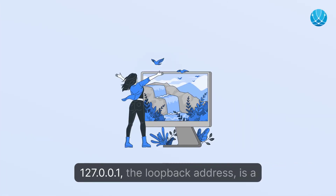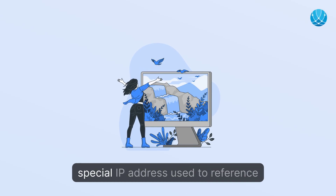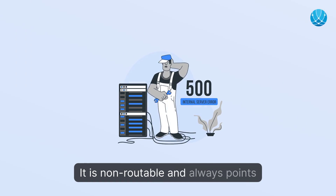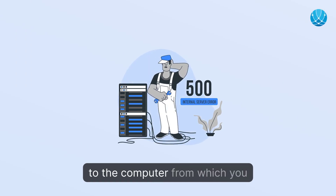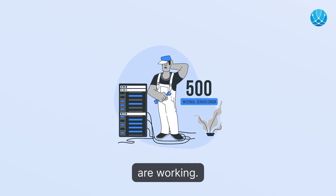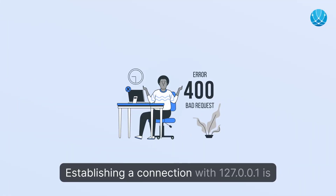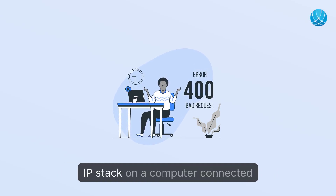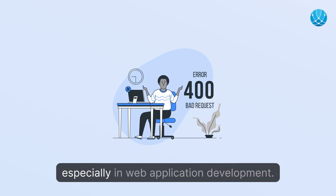127.0.0.1, the loopback address, is a special IP address used to reference the computer you are currently on. It is non-routable and always points to the computer from which you are working. Establishing a connection with 127.0.0.1 is common when validating and testing the IP stack on a computer connected to the internet or a network, especially in web application development.